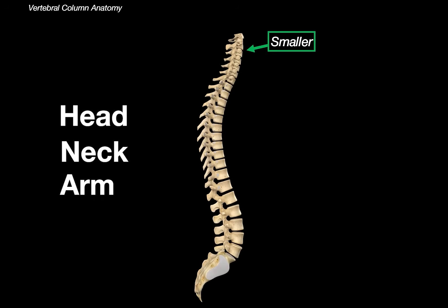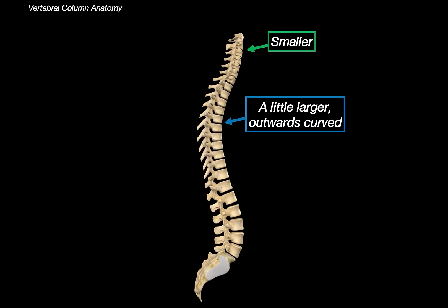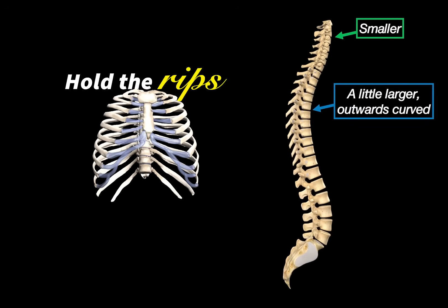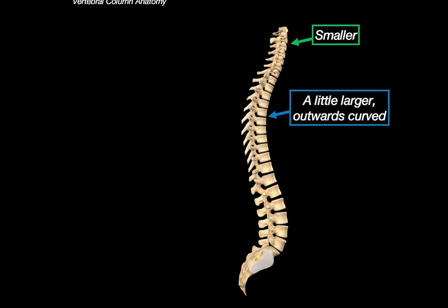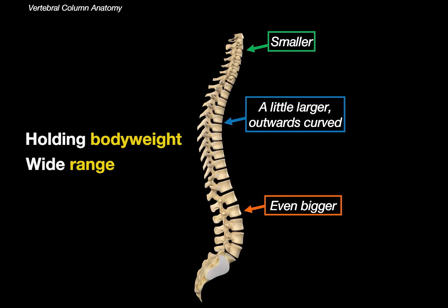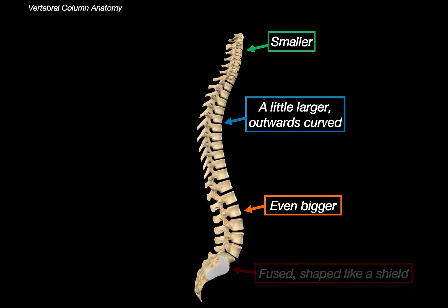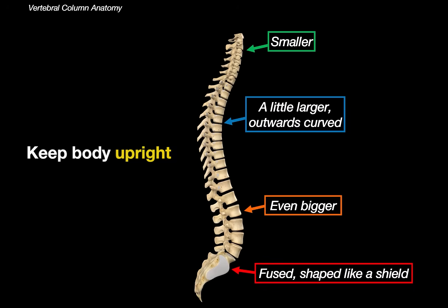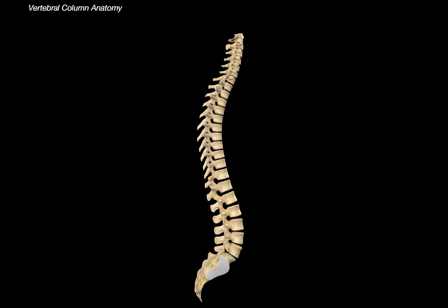As you go to the middle, the spine starts getting a little bit bigger, curved outwards. This is to hold the ribs and protect your thorax. A little bit down, it gets even bigger — large vertebrae responsible for holding the weight of the body and allowing for a wide range of body motions. A little bit more down, and you will notice the bones are now fused into a shield-looking unit that holds a lot of our muscles that help us keep our body upright. Because the spine has different functions at different regions, we divide it into parts.